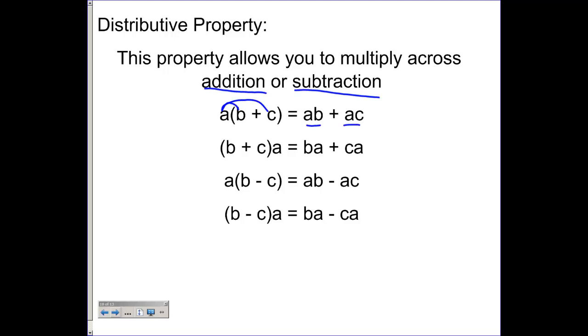And it doesn't matter which side the a is on. If the a is on the back side, you can still multiply across like this. The only difference is we show b times a and c times a, instead of a times b and a times c. However,